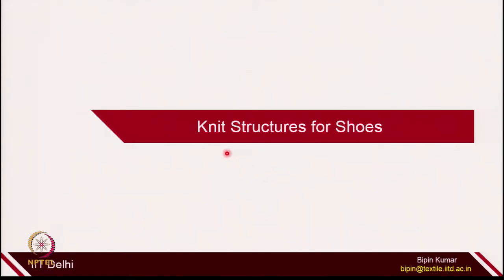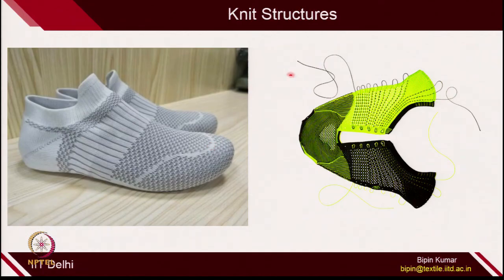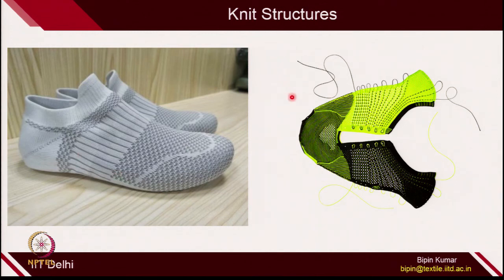The first application of knitting is the shoe application. Knit structures are now being used in shoes — mostly weft as well as warp knit structures in making shoe uppers. Apart from shoe uppers, they are now also making completely seamless shoes made up of knit structures. The beauty of knitting is not only can you make the product, but also create very beautiful surface designs. The key question is how you can actually control the fabric properties for these shoe structures.